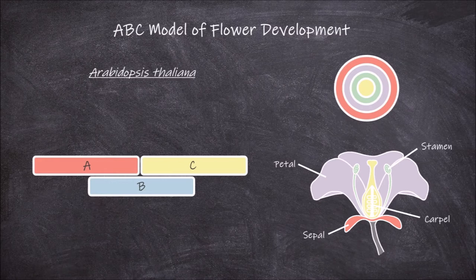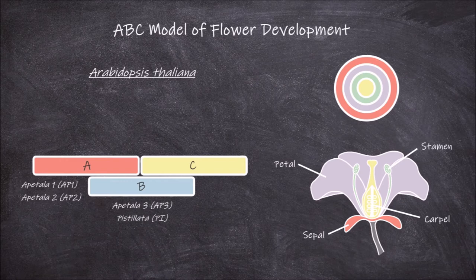In Arabidopsis, the A genes are represented by two main genes: Apetala 1 and Apetala 2. The B genes are also represented by two main genes: Apetala 3 and Pistillata. The C genes are represented by one gene, Agamous. These genes work together in the development of the different flower whorls.